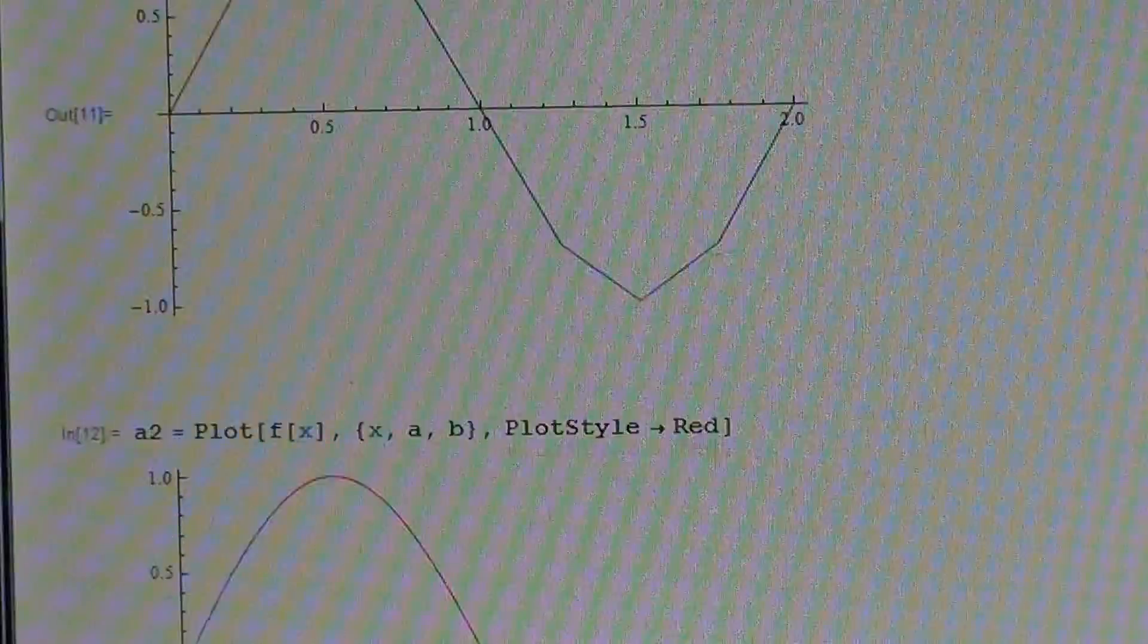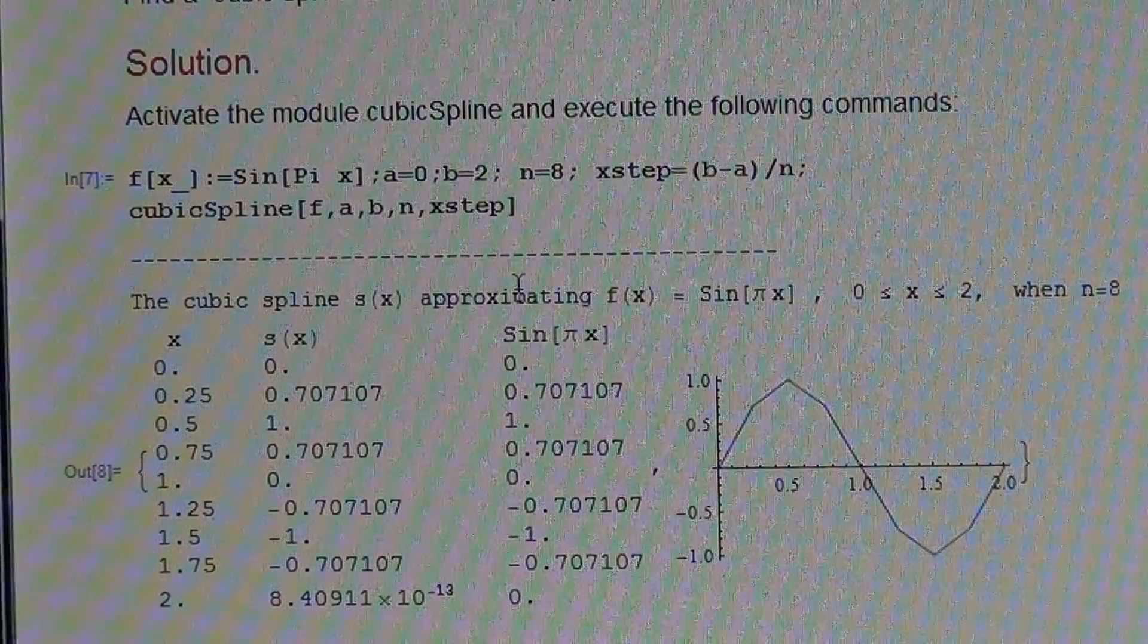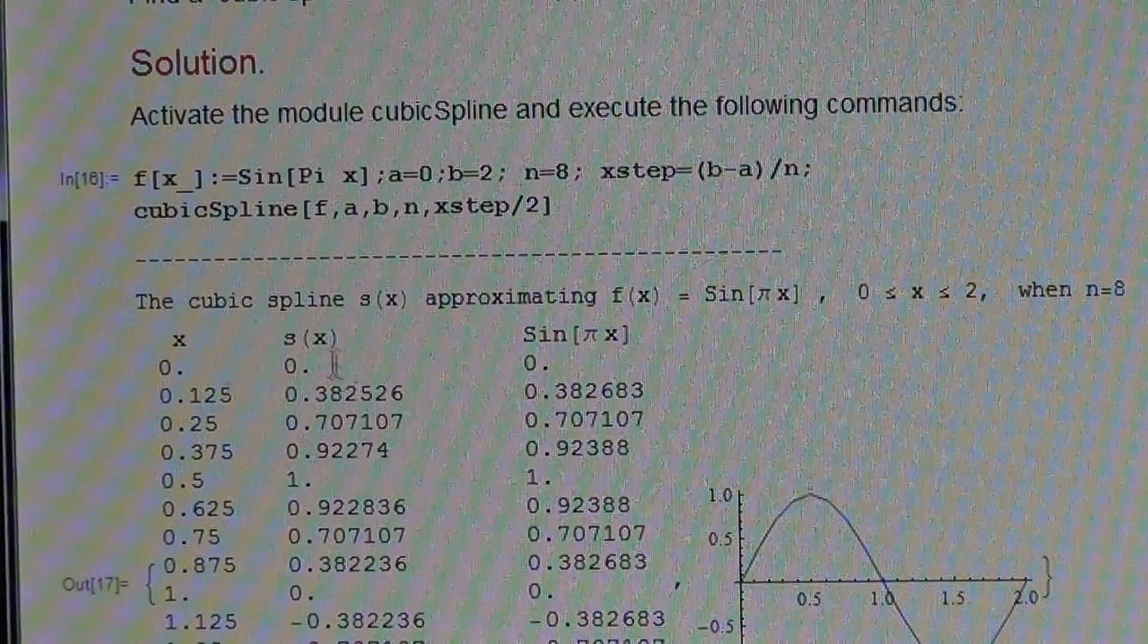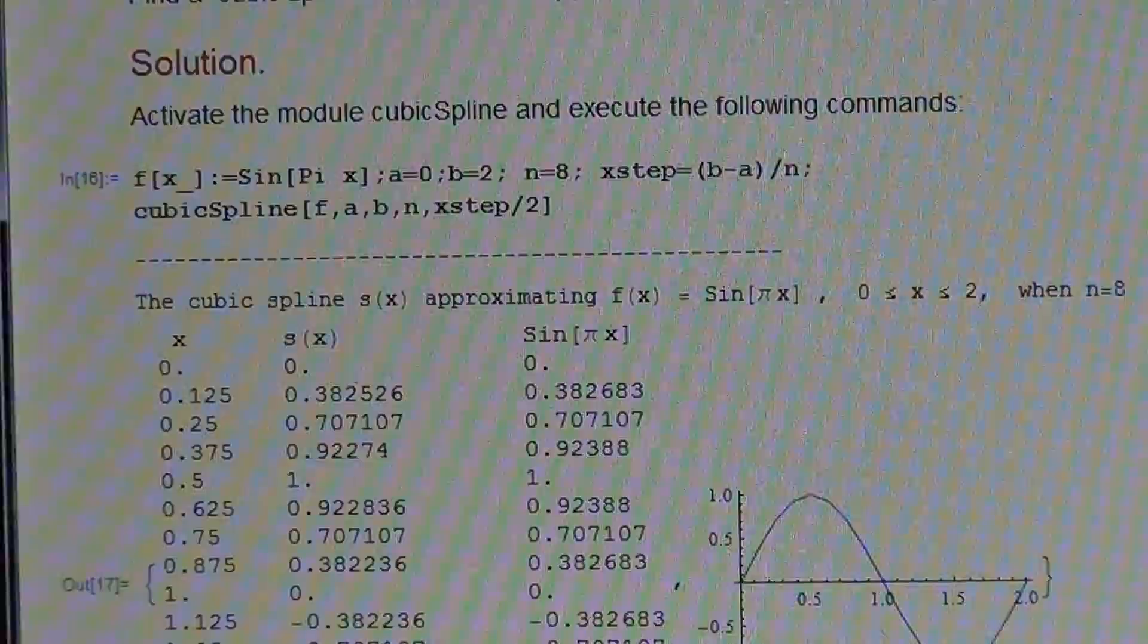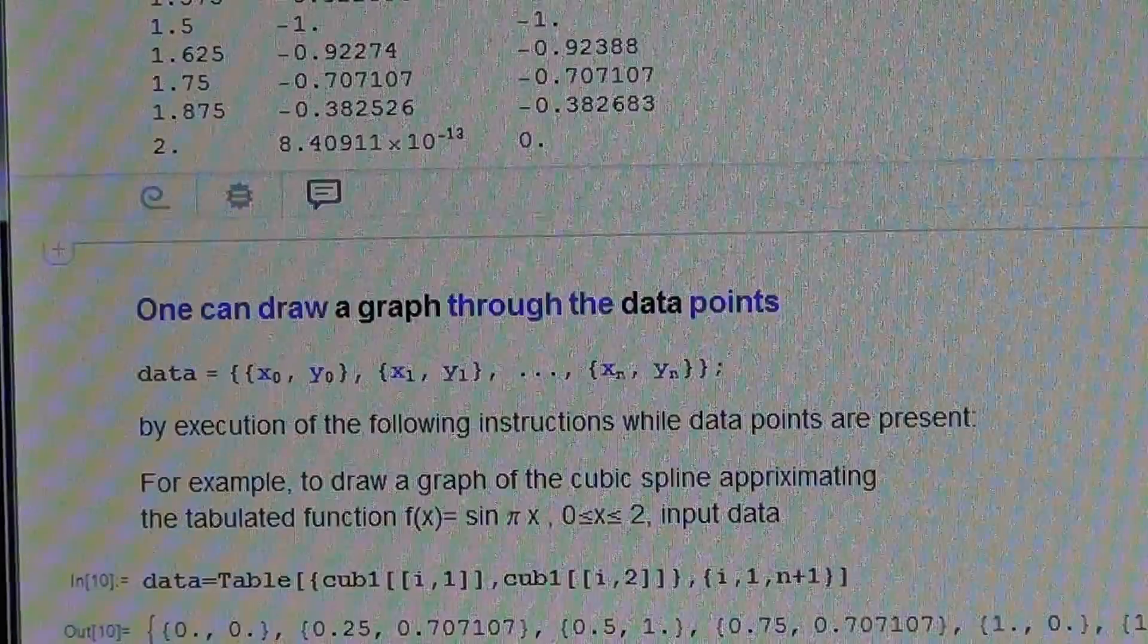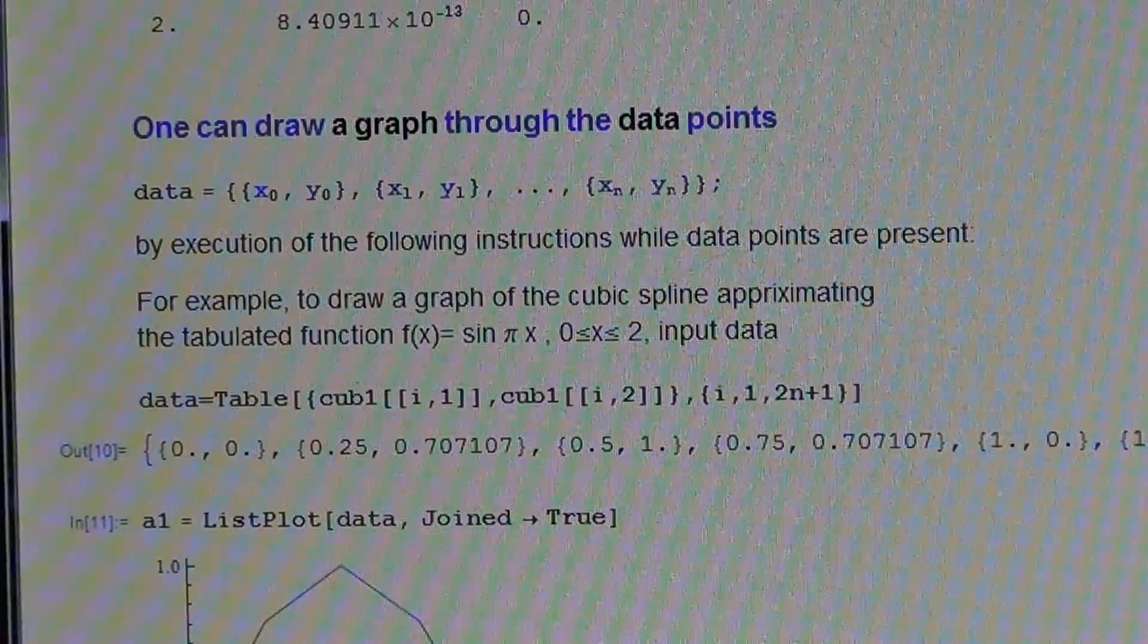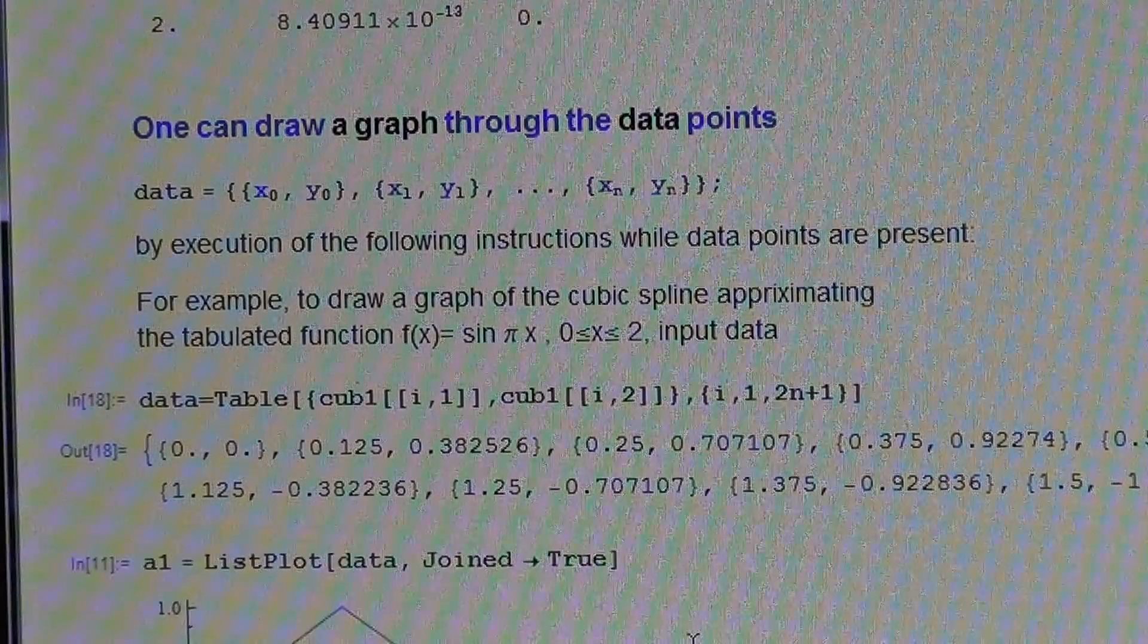Now let us repeat the tabulation with twice denser points. We divide by two to get twice smaller step. We have a longer table: first column argument, second the values. Now we will have a more accurate graph because we consider more points.